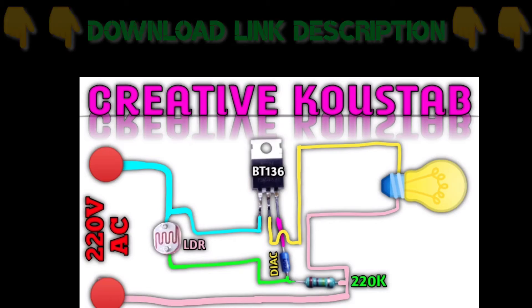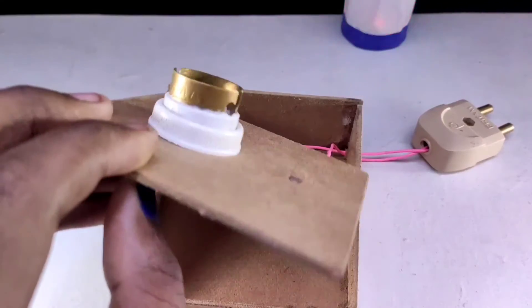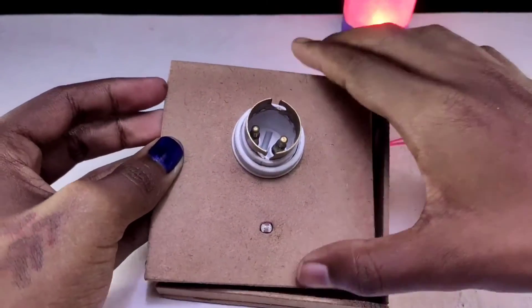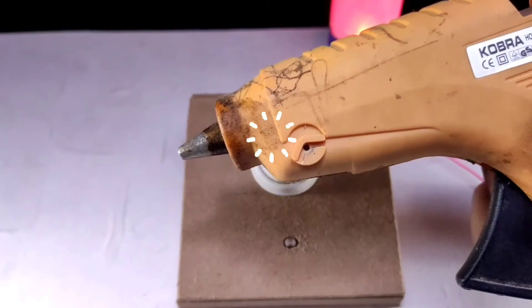The download link of this circuit diagram is given in the description box. This time I will fix the box with the help of a glue gun.